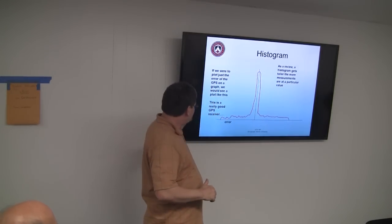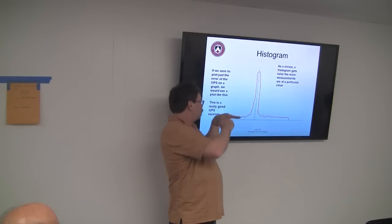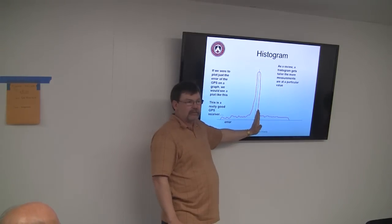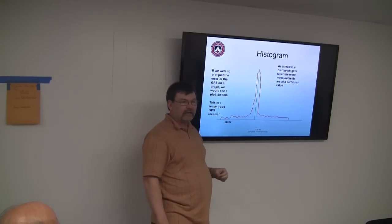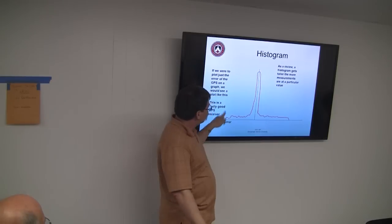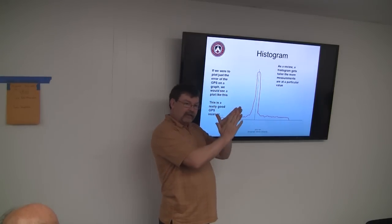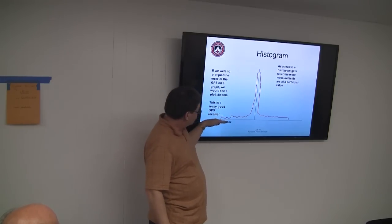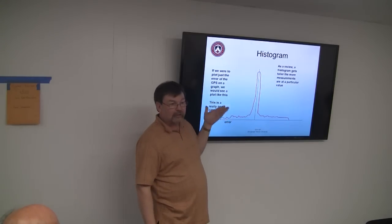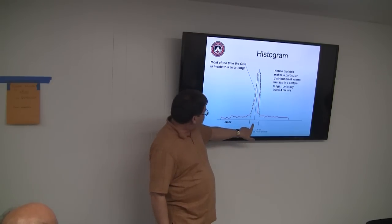Let's look at a more easily understood example. A histogram moves the graph up for each measurement based on the amount of error — the distance from where the GPS really is. If you ran it for 24 hours and plotted it out, you'd end up with a curve that has a floor, a slope, a peak, and is reflected on the other side — a roughly bell-shaped distribution.